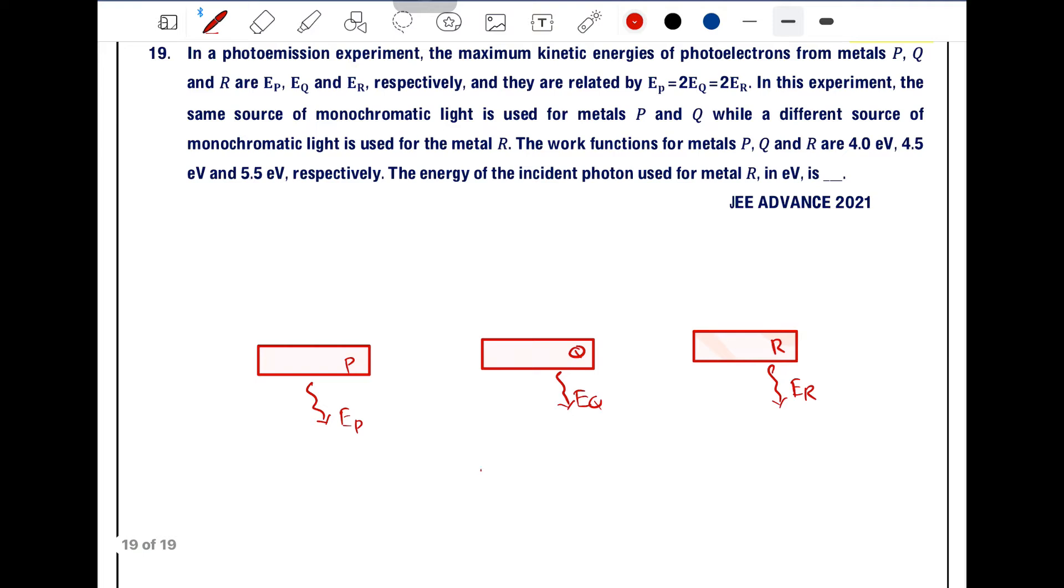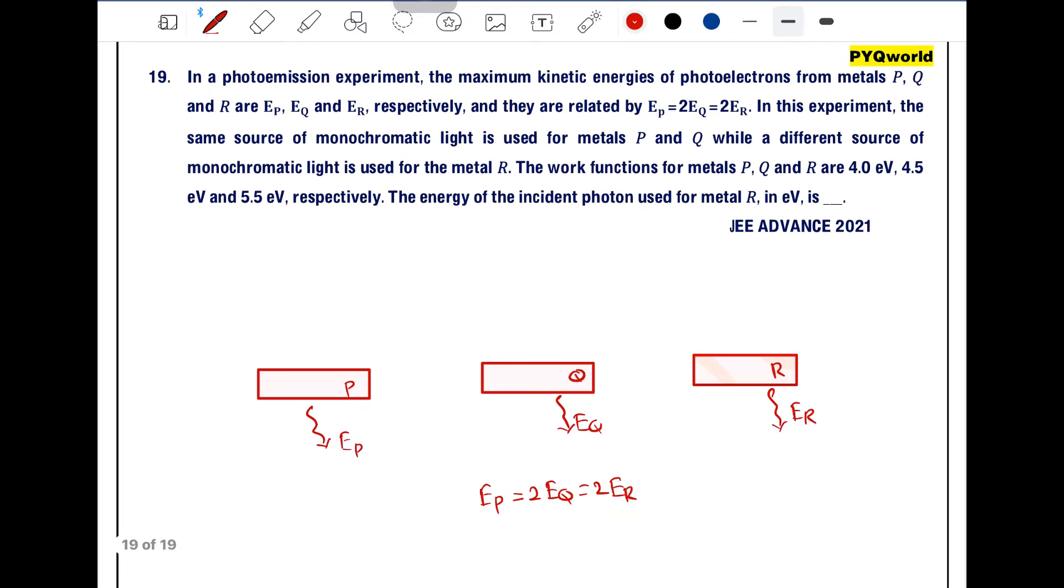Now they have given the relation between EP, EQ and ER as EP is equal to 2EQ is equal to 2ER. In this experiment, the same source of monochromatic light is used for metal P and Q while a different source of monochromatic light is used for metal R.